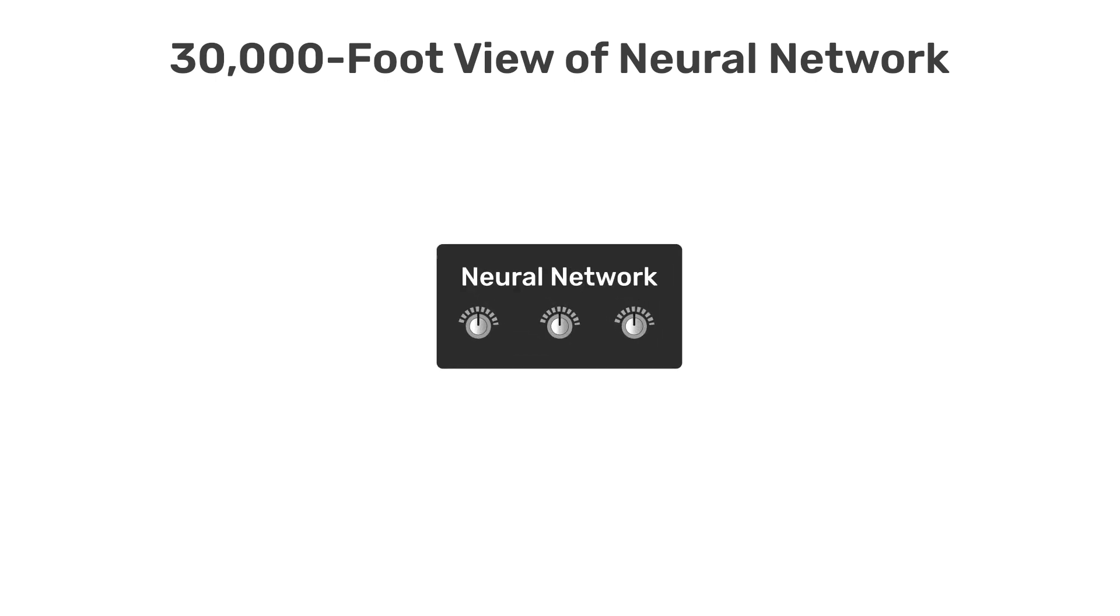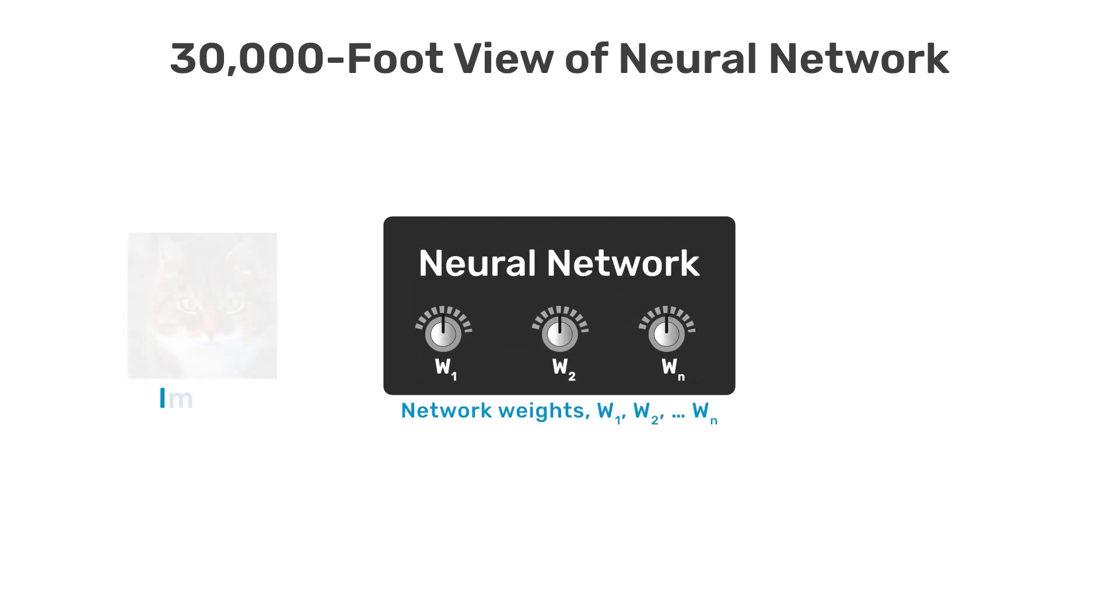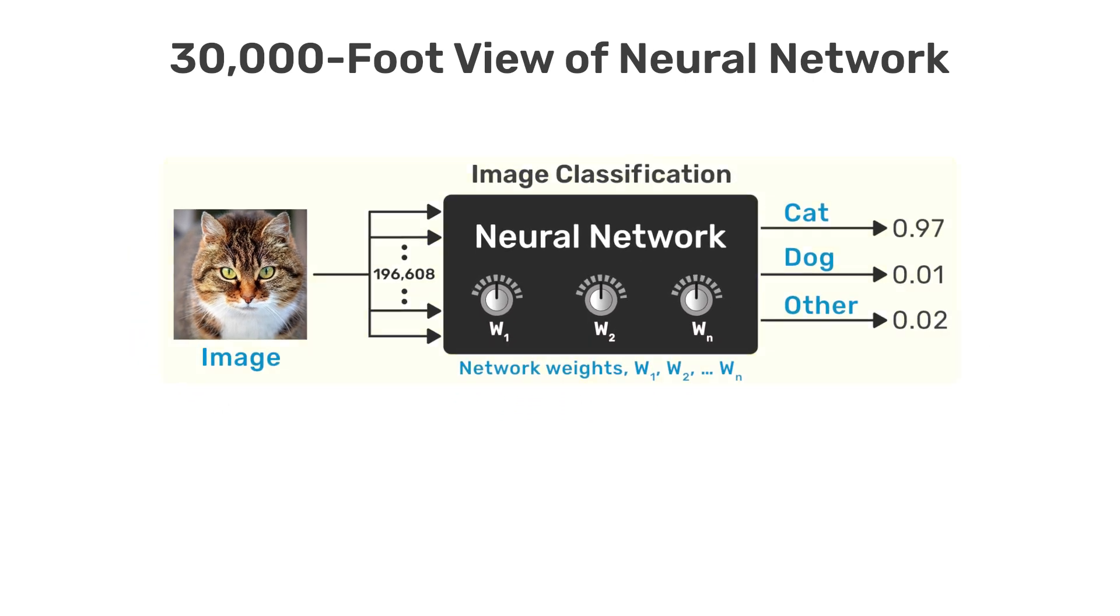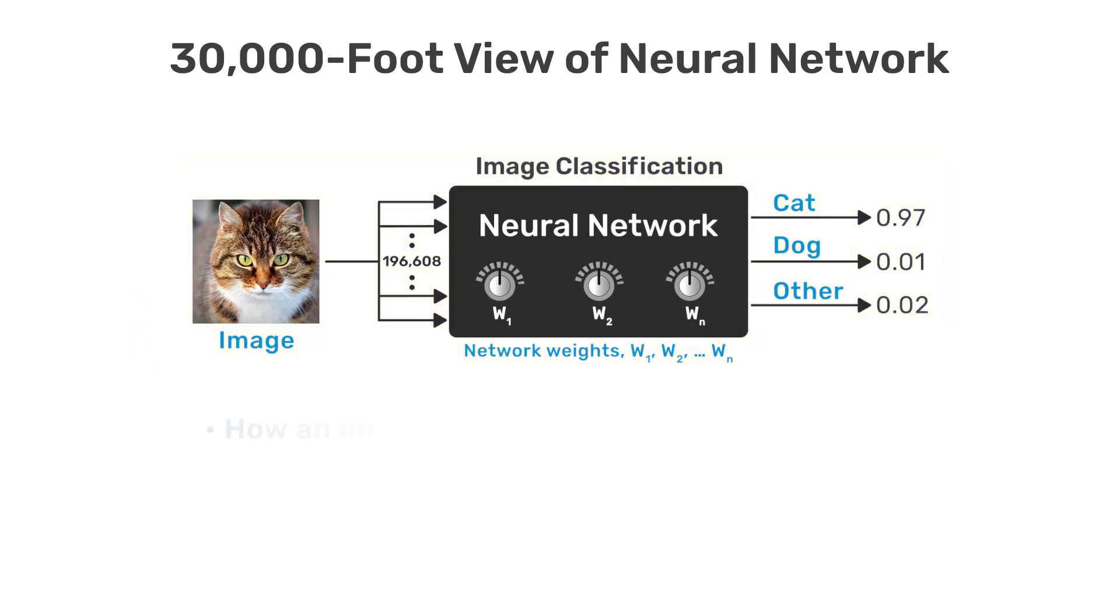In the previous video we covered a very high level view of neural networks which focused mainly on the inputs and outputs and how the results are interpreted for an image classification problem. In this video we'll continue with the same example and delve deeper into how an image classification network is trained.